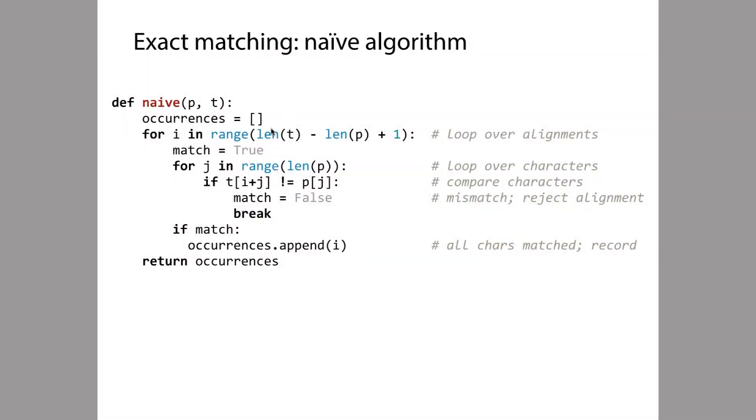Now we reach this outer loop here, which iterates over all possible alignments, all possible ways of lining up the characters of P opposite characters of T.